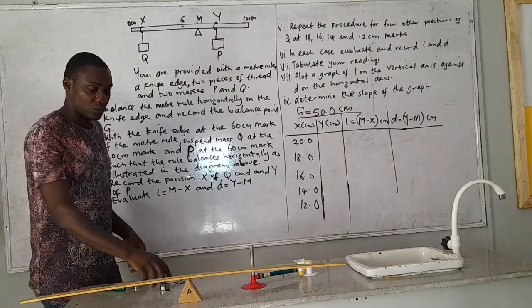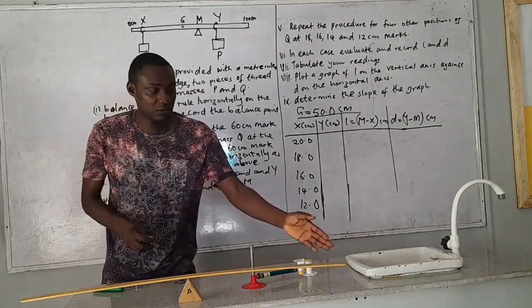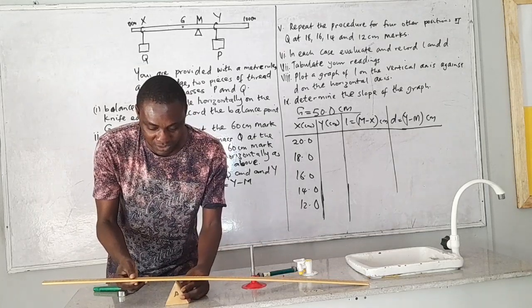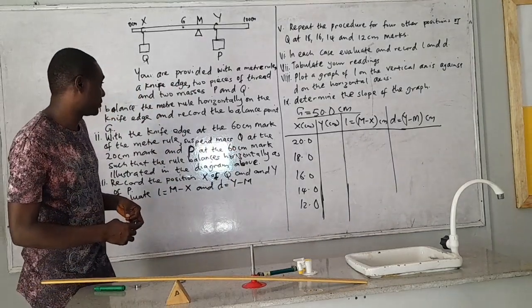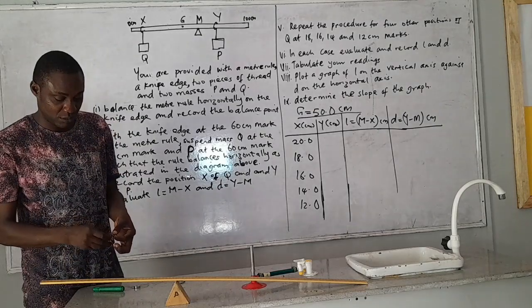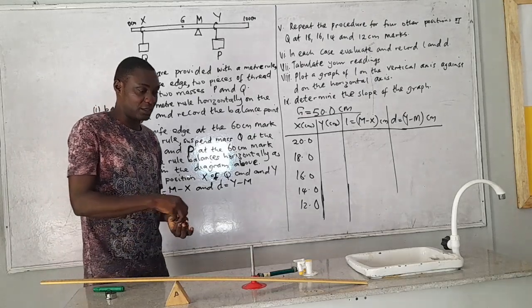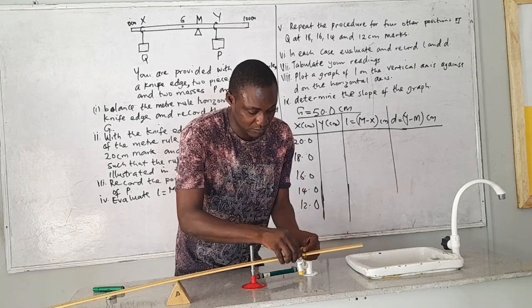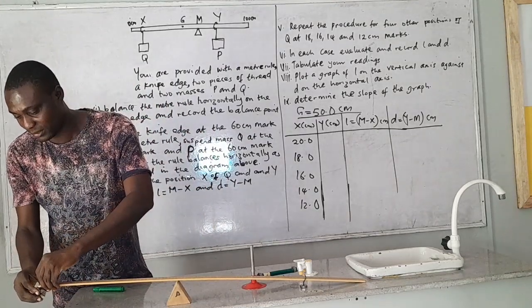Next, this is my mass labeled P. So I'm reading this way. This is my zero mark. So this is my 60 cm. So I'm going to adjust this. I'm moving to the 60 cm mark. So I have moved this to the 60 cm mark. So I'm reading this way. This is my zero mark. So this is my 60 cm mark. So I'm going to place this on the 60 cm mark and try to balance it horizontally.